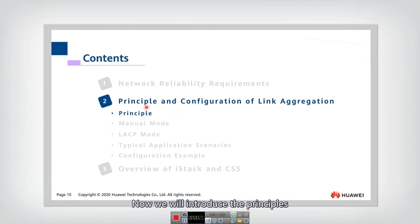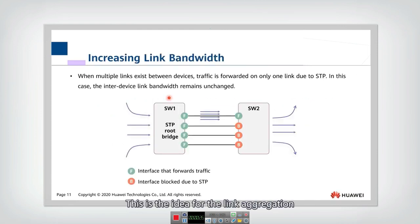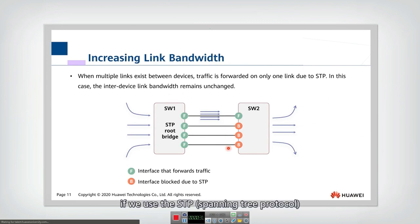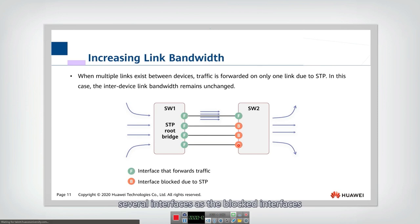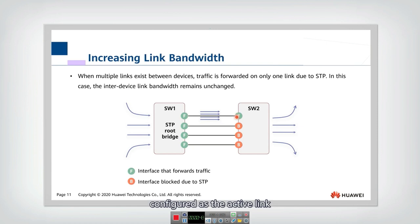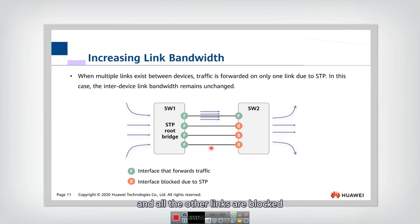Now we will introduce the principles of link aggregation. When multiple links are used, if we use STP — the spanning tree protocol — it will set several interfaces as blocked interfaces to prevent loops. So actually only one link can be configured as the active link, and all traffic must go through this link while all other links are blocked.